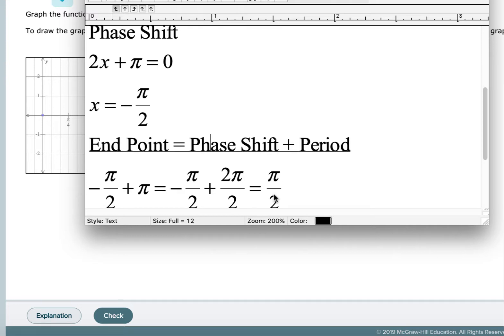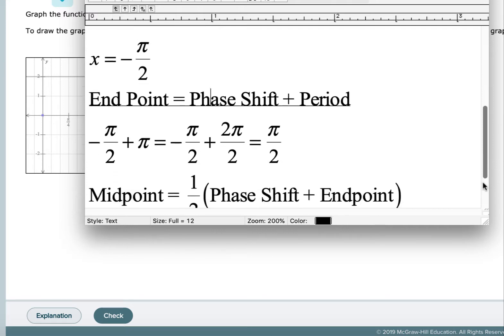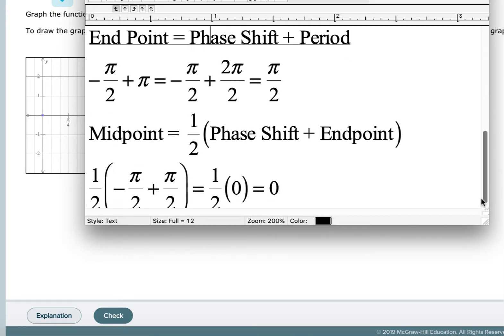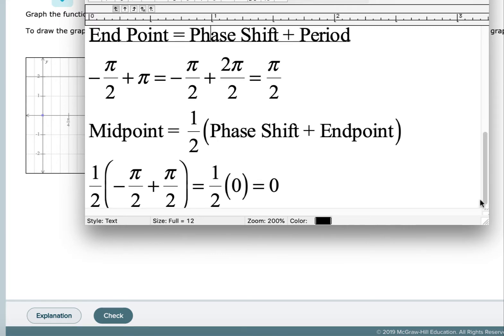So we can see that it's symmetric about the y-axis. But if we use the midpoint formula, it's always one half—the two points divided by 2, which is equivalent to one half of the sum. So to find the midpoint, we're going to take one half of the phase shift plus the endpoint. So we're going to take one half of negative π over 2, which is the phase shift, plus π over 2, which was the endpoint. And one half of zero is zero, so we know that it has a midpoint at zero.